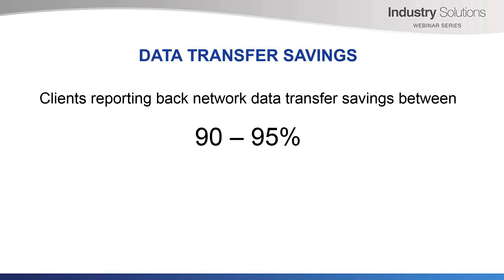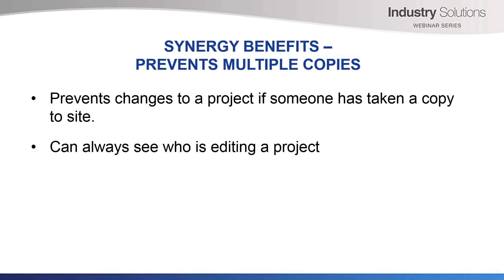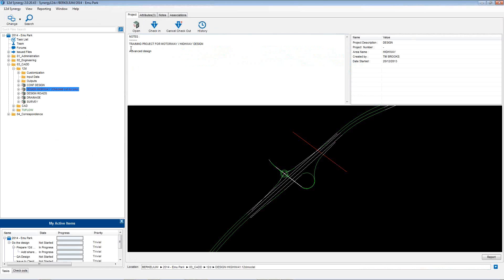We've had clients reporting back network data transfer savings between 90 and 95%. Synergy prevents changes to a project if someone has taken a copy to site or likewise taken a copy home to work on, therefore it prevents multiple live copies. Synergy also indicates who has a project checked out for editing. You can see this project is checked out by me as indicated. If it was checked out by another user in the organisation, it would have their username there instead. So the checkout procedure locks it so that nobody else can edit this project.